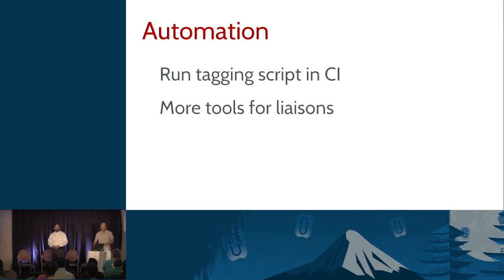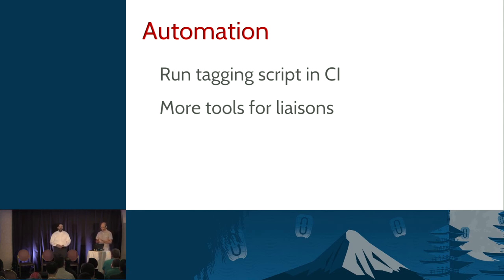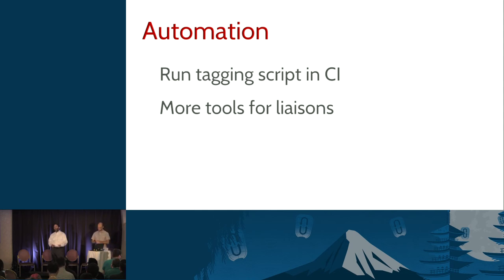During the Mitaka cycle we're going to continue with automation work. The releases repository is only semi-automated right now with a human doing the actual release. We want to get to a point where when the release request is approved and merges, the robots automatically do the release. We're also going to work on additional tooling to help liaisons for release-related tasks. Each project is supposed to have a liaison designated to work with the release management team, and they'll need to interact with us to make sure all the right release requests are approved.